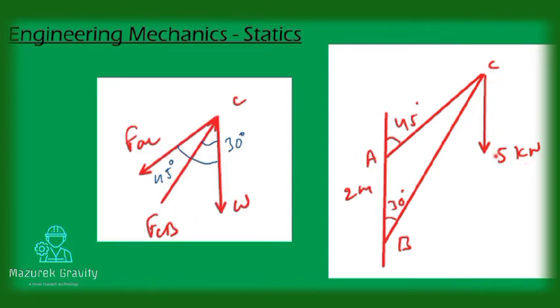The angle between vertical and AC is 45 degrees, angle between vertical and BC is 30 degrees, and distance between A and B is 2 meters. By looking at this picture we understand that BC will be under compression and AC will be under tension.